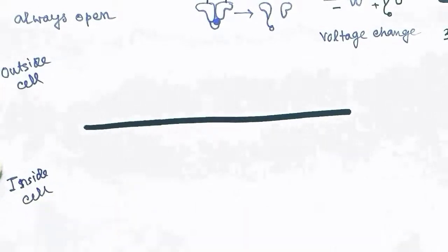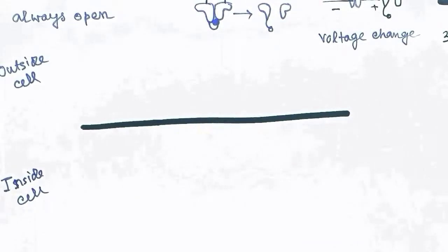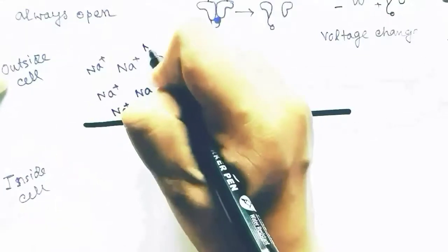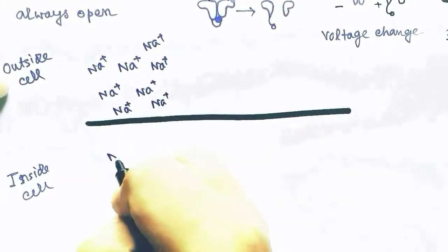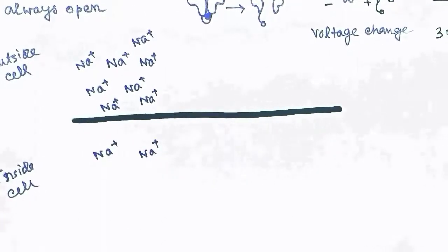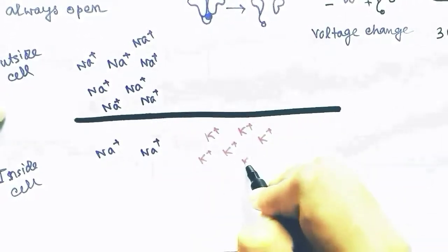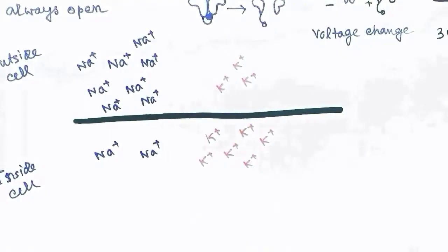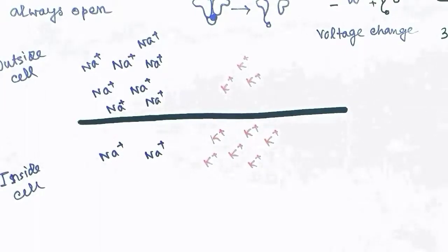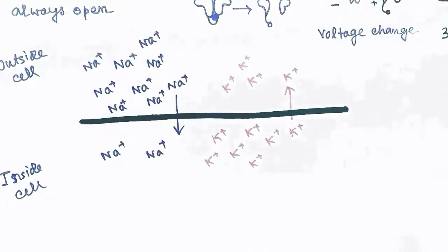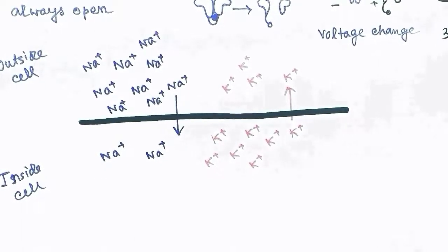Looking at the cell membrane of the neuron: outside the cell there are more Na+ ions than inside, and there are more potassium ions inside the cell than outside. So according to the concentration gradient, sodium flows from outside to inside and potassium flows from inside to outside.